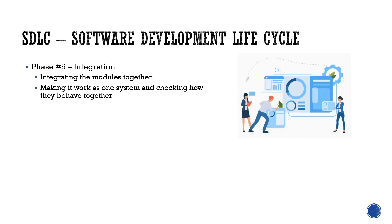The next phase is the integration phase. This is when you put all the modules together. For example, if there are 10 people working in your team, each working on different modules, after a sprint - a period of 15 days in an agile methodology where each person has certain tasks - they create their own modules and then you integrate them to make the whole system work as one.